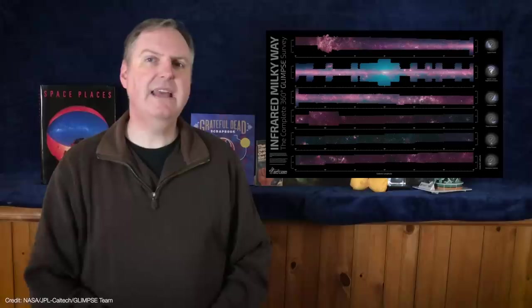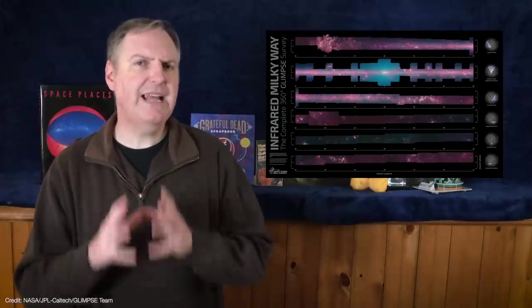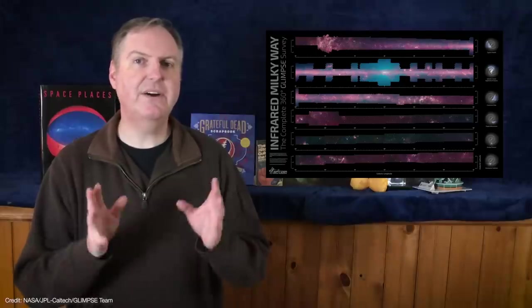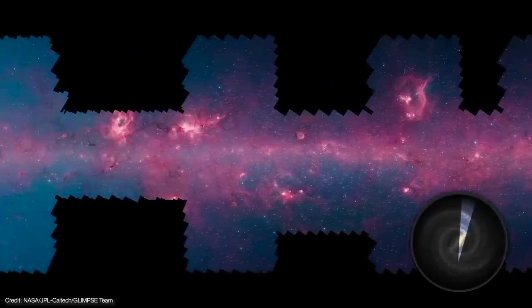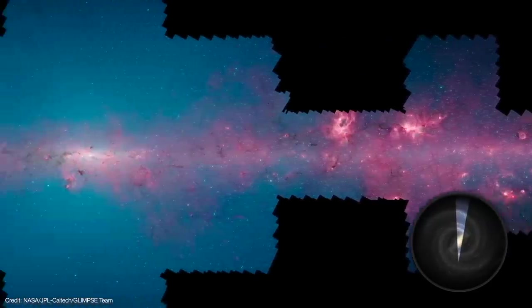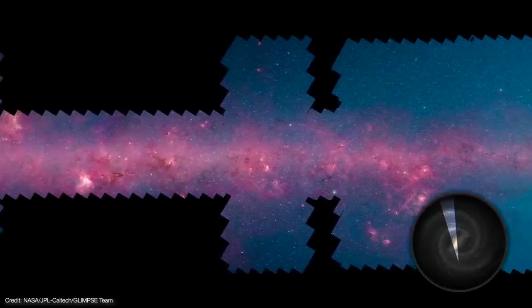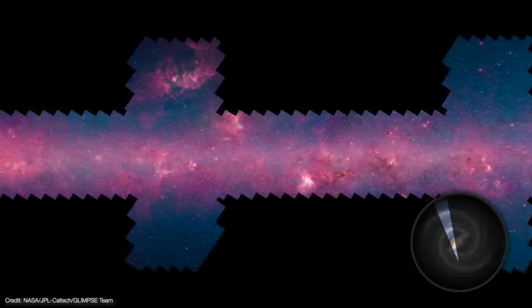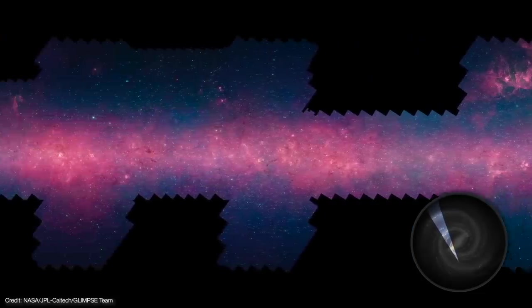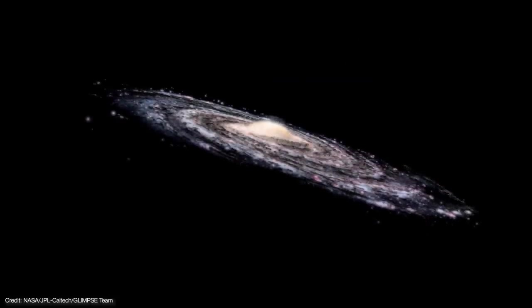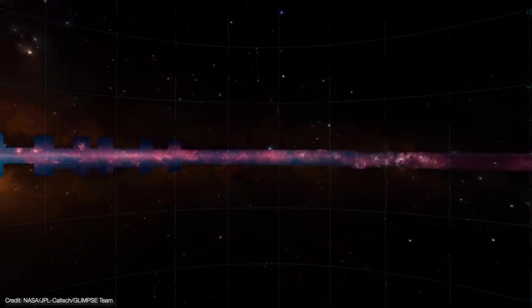Over the course of a decade, Spitzer devoted a total of 172 days taking images of the disk of our galaxy. The project was the Galactic Legacy Mid-Plane Survey Extraordinaire, or Glimpse. In 2014, astronomers completed the painstaking work of stitching together each of the images into the largest infrared panorama of our home galaxy. This picture covers only about three percent of the sky, but it includes more than half the galaxy's stars and the majority of its star formation activity.